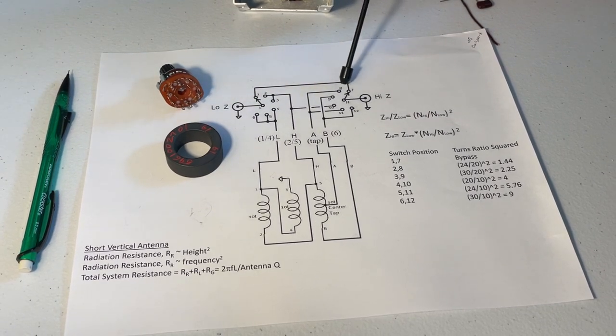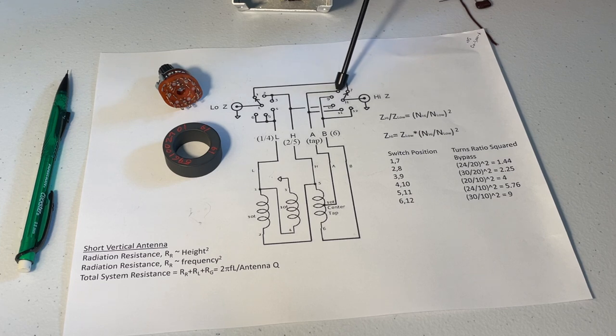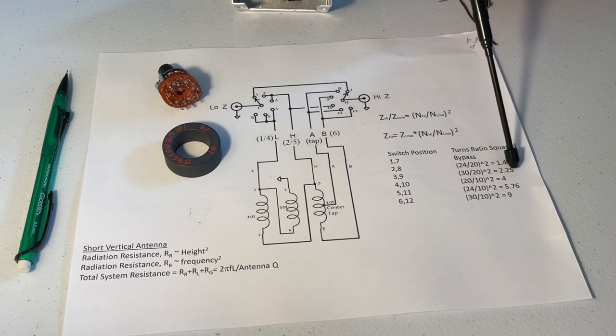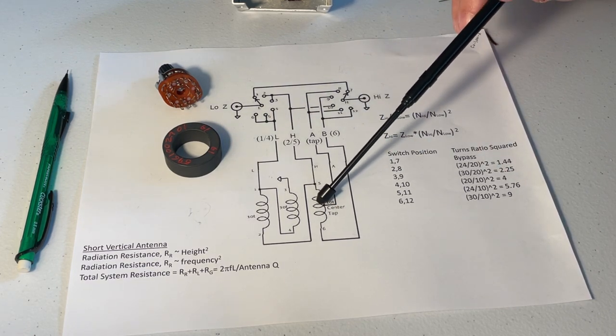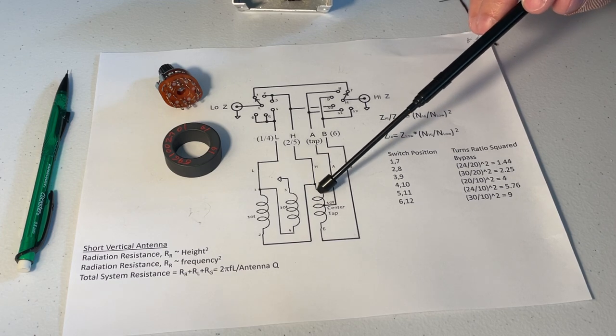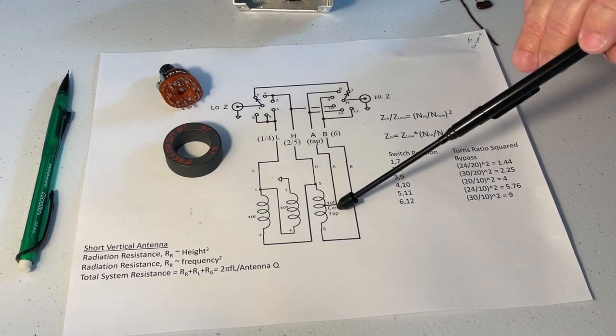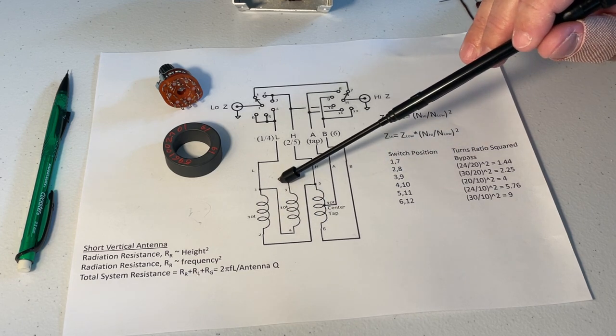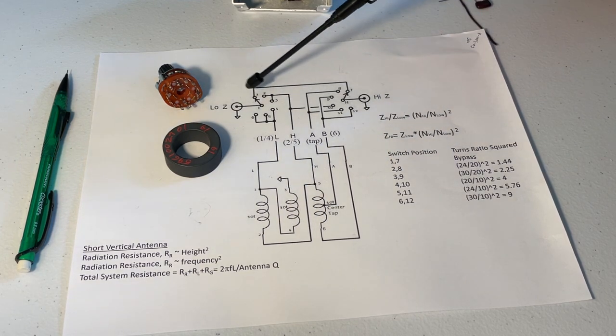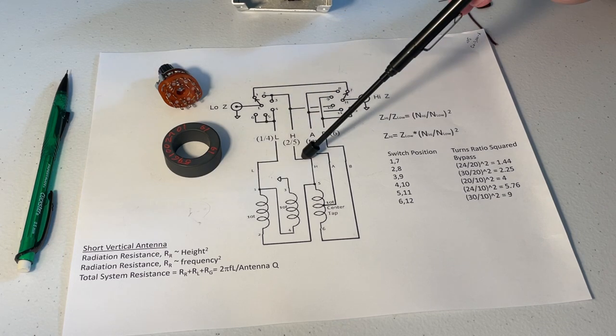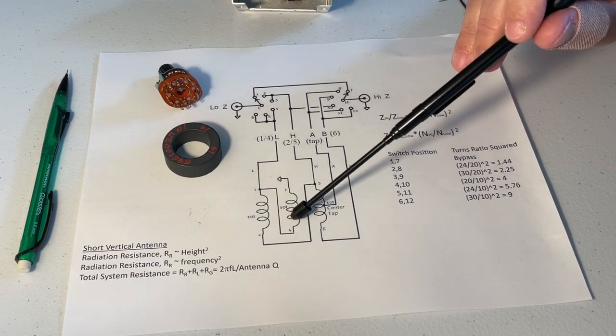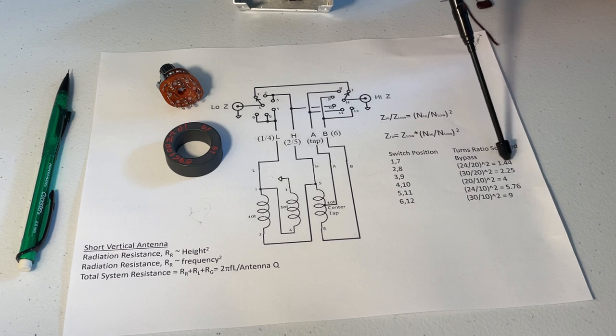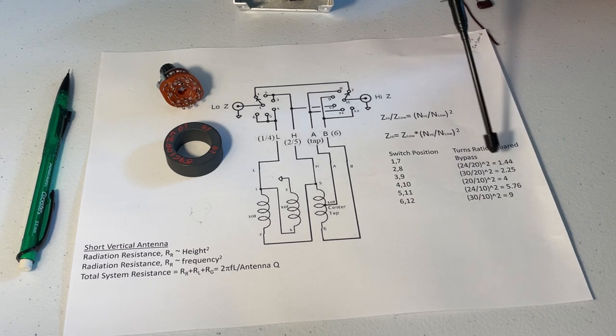So then if we go to position two on the switch, it's position eight over here. So on the high side, running from position eight you come down, you go into the tap. I notice from his numbers, even though it's a 10 turn, I guess he assumes it's four turns, or maybe it just works out that it's four turns. But nonetheless you come into the tap, you go through four turns on this winding, go all the way around, you go through 10 turns here, go around, go through 10 turns there. So you got 24 turns. On the low Z side you come around and you go through 10 turns here and 10 turns there so you got 24 turns divided by 20 turns squared, which is a transformation of 1.44.